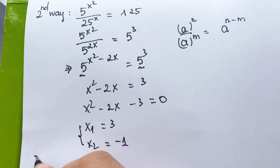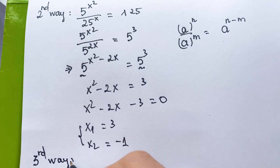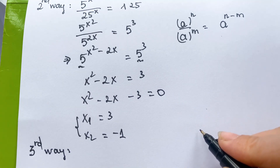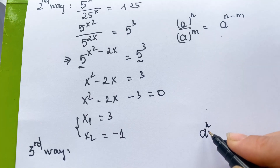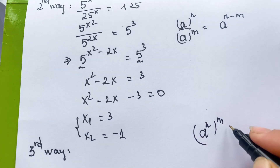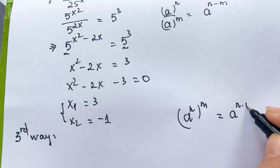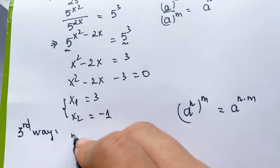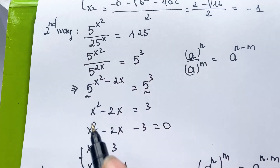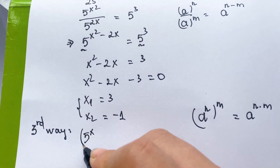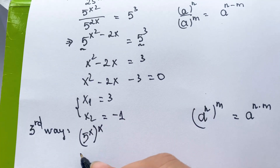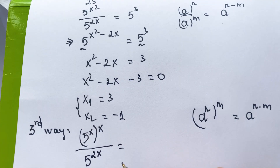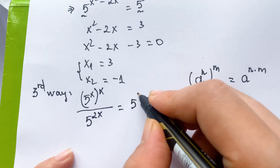For the third way, everyone look at this rule: a power n, whole power m, equals a power n times m. So 5 power x squared can be written as 5 power x, whole power x, which equals 5 power x squared. And 5 power 2x equals 5 cubed.